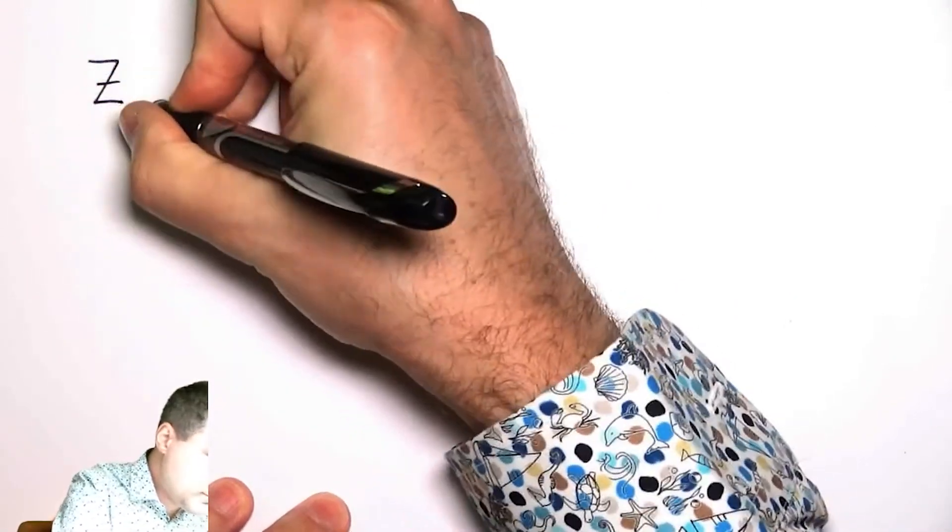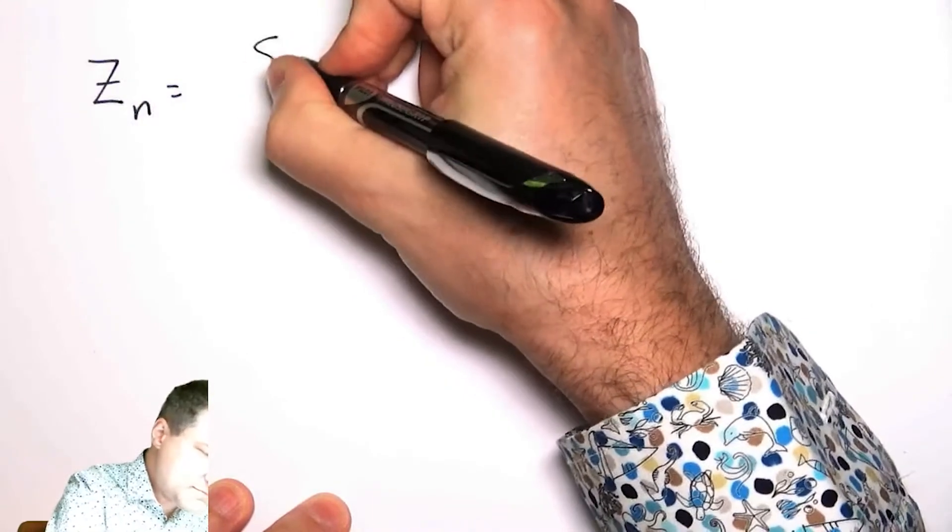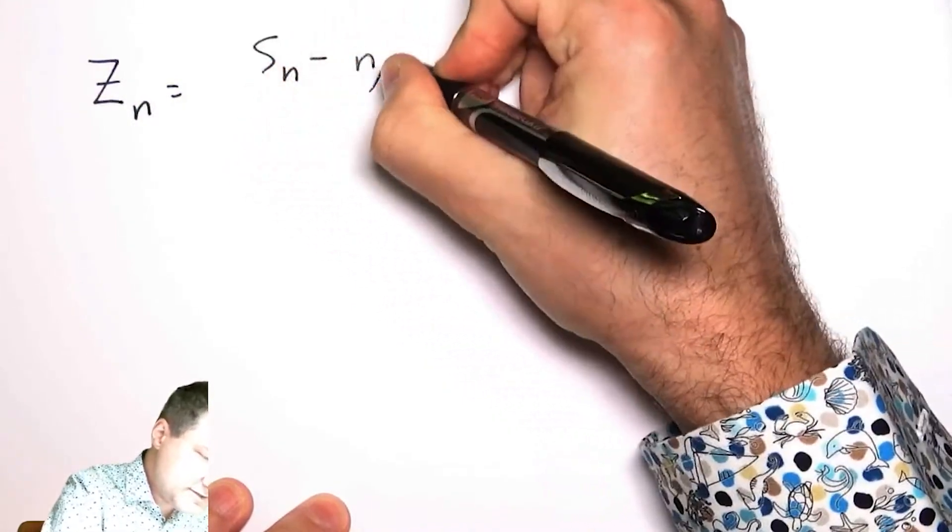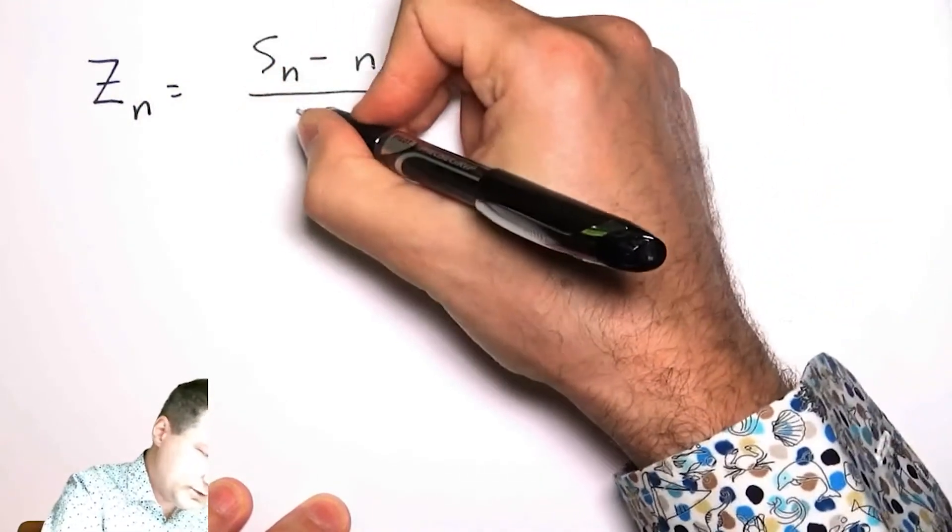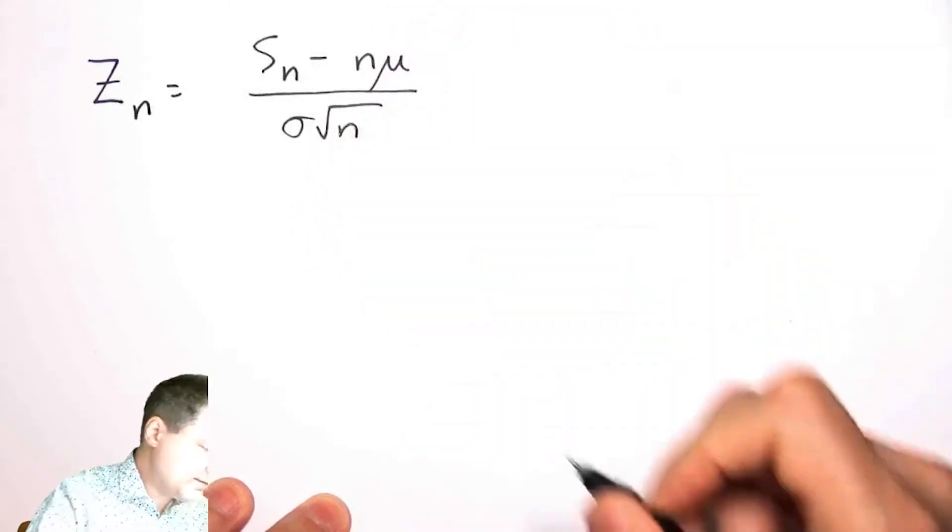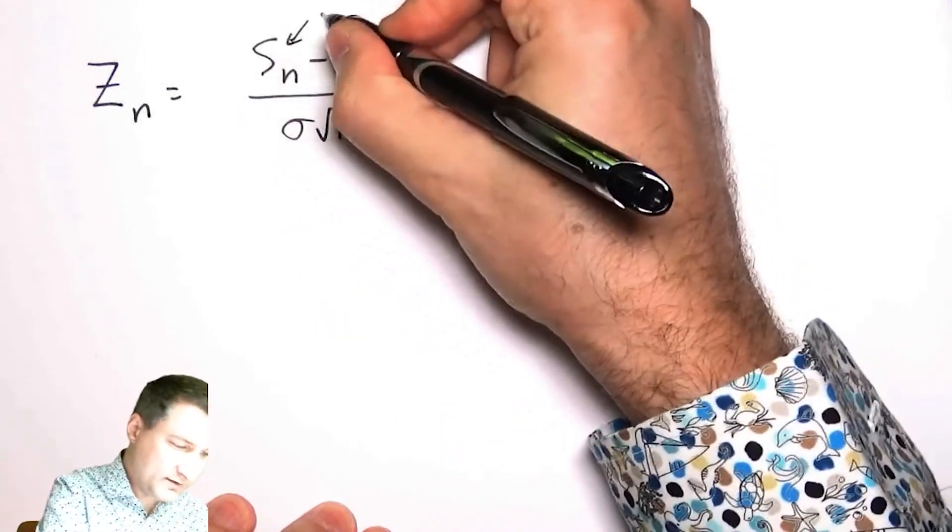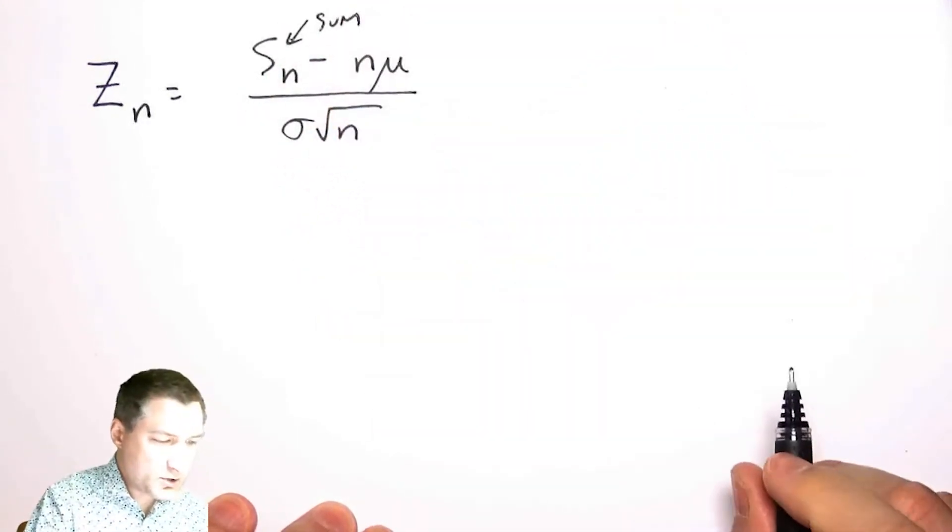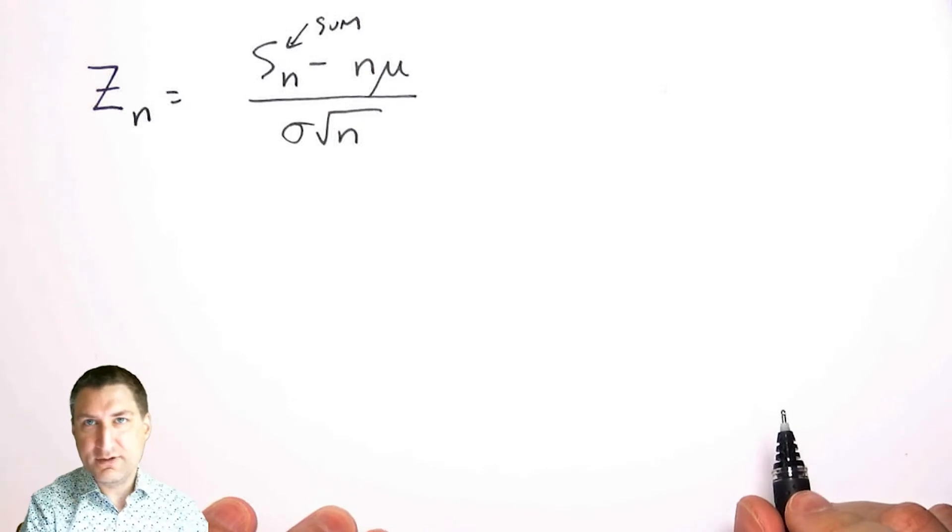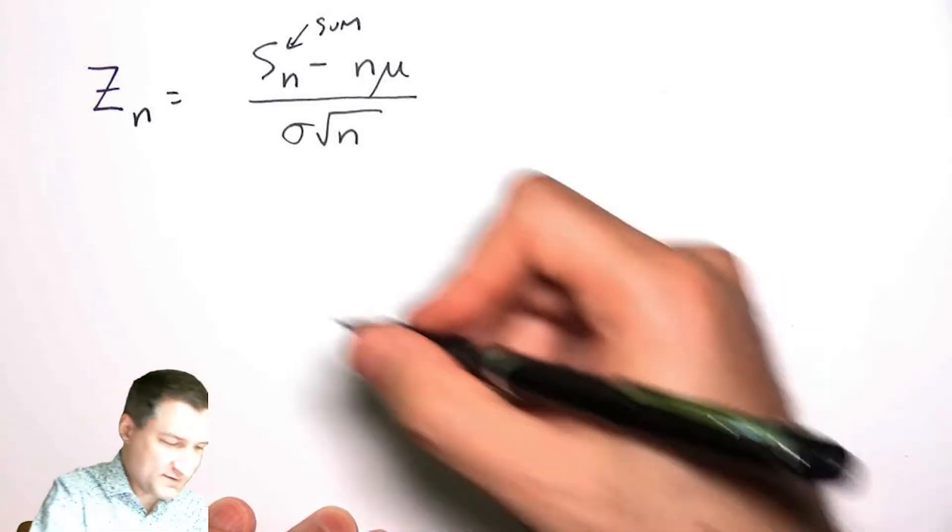I'm going to define a new variable z that is basically related to the sum of random variables normalized in a certain way. Remember, this is the sum of all the random variables. What are the expected value and variance of z?